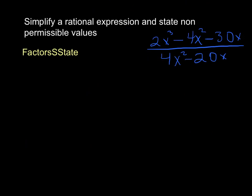Okay, so here's an example where we need to simplify the rational expression and state the non-permissible values. So the first step is to factor the expression. So we're going to take this, and this is something we already know how to factor, and this is what we end up with.